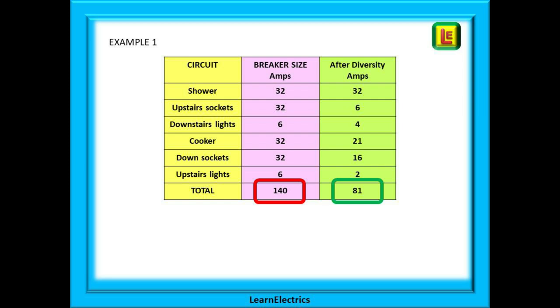We can see here that if we just added together the breaker sizes, we will have 140 amps as potential full load. Clearly, this is unacceptable, which is why we look at the diversity column and check what we've allowed. The shower has no diversity applied, but all the others do, according to the calculations that we've made, and they will be different for each dwelling.